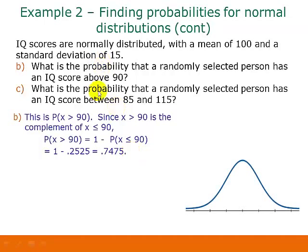Part C asks, what is the probability that a randomly selected person has an IQ score between 85 and 115? So here's our picture with our three values labeled, and it just so happens that 85 is exactly one standard deviation below the mean, and 115 is one standard deviation above the mean. So here's our area shaded in between those two.